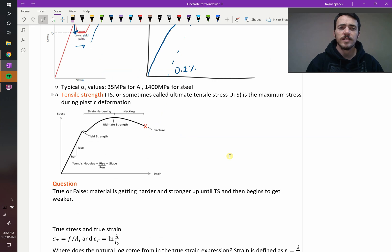There's something known as the tensile strength, sometimes we call it the ultimate tensile strength, and this is the maximum stress that is achieved during stress versus strain. So there's some maximum point it reaches, and then you'll notice that the stress actually starts going down.